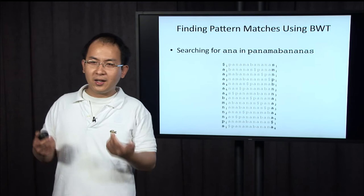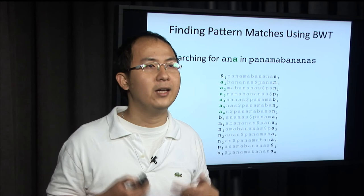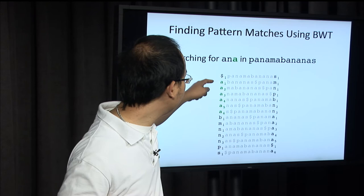Because the last column is known, we can also know the first column by sorting. So to look for ANA, we start from the last character, A, and we look in the first column. We can identify all the rows where A appears.